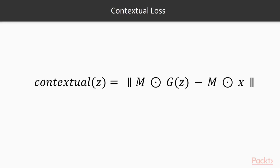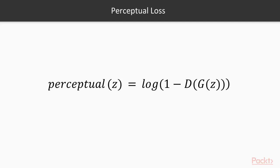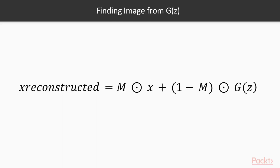Here is the formula for contextual loss. Perceptual loss has the same criterion used in training DCGAN to make sure that the recovered images look real. This is the formula for perceptual loss. Next, we need to find an image from the generator G(Z) that provides a reasonable reconstruction of the missing pixels. Then, the completed pixels can be added to the original pixels to generate the reconstructed image using this formula.